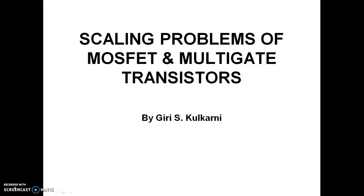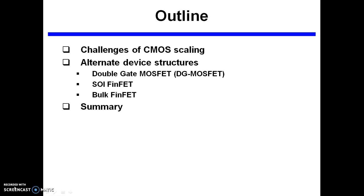Hello and welcome. Today we are going to study about the scaling problems of MOSFET and alternate structures such as multi-gate transistors. The success of the VLSI industry is due to reduction in the MOSFET size. As we reduce the size of the MOS transistor, integration density increases, power dissipation reduces, and cost reduces. But apart from these advantages, there are some challenges as well. This is the outline of our today's talk.